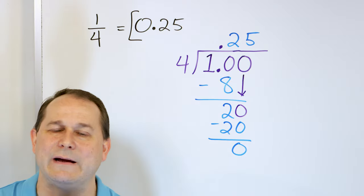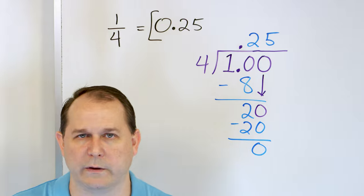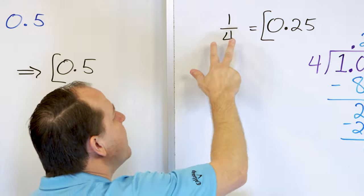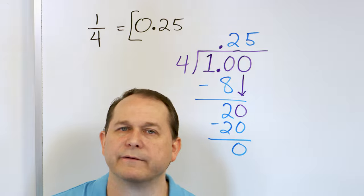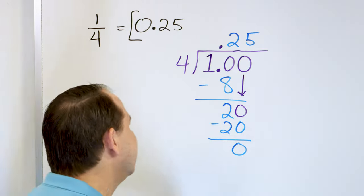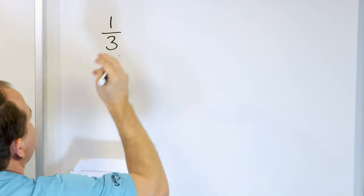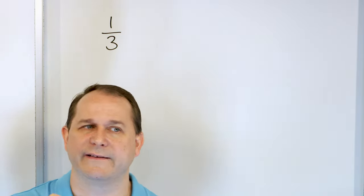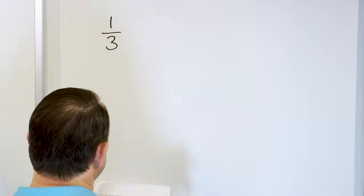I want you to remember these decimals over time — that's why I'm doing these fundamental ones. Remember that one half is the same as 0.5, and one fourth is the same as 0.25. It might take a little time, but for now I'm showing you how to calculate them. Now let's look at a really important one. What about the fraction one third? What is the decimal equivalent of one third?